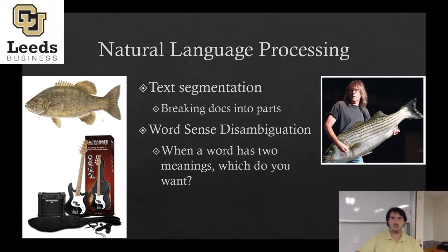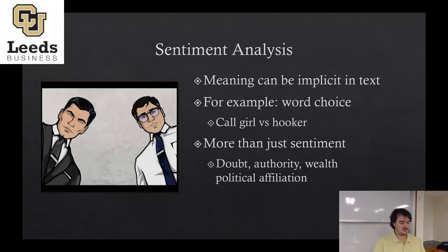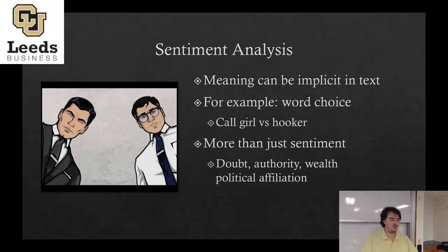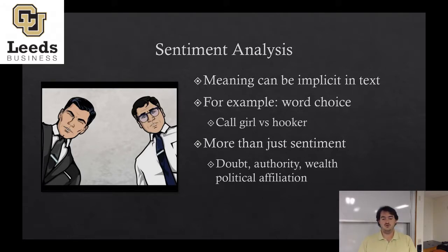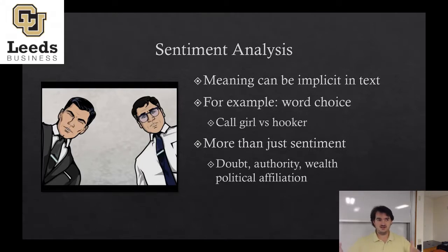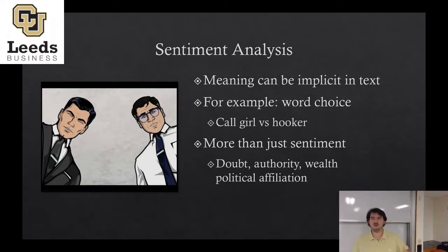Those are the core bottom-level building blocks of text analytics. Once we go up a level, we can look at things like sentiment analysis. Sentiment analysis is where you look for meaning that is implicit within text, not explicitly stated, by looking at the charge of a word — is it positive or negative? Despite the name, it can be anything with two different ends, or multi-label classifications. It's been used on doubt, authority, wealth, and political affiliation.